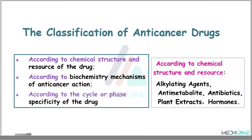The first classification is based on the chemical structure and source, whereby we have drugs such as alkylating agents, antimetabolites, antibiotics, plant extracts, hormones, and many others.